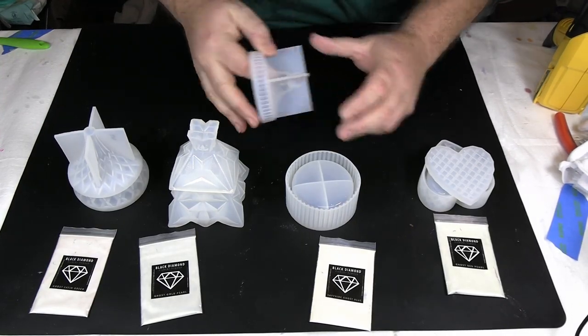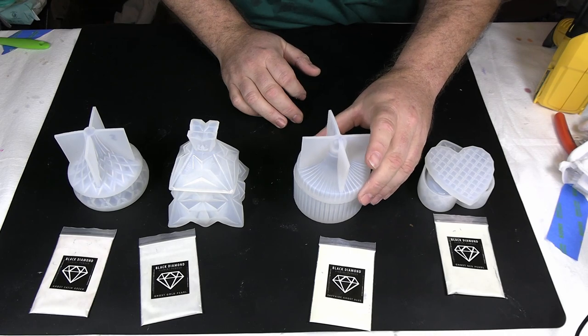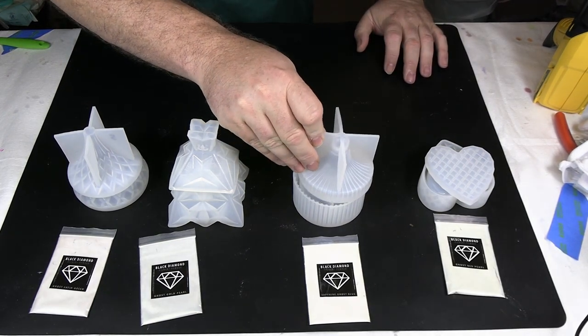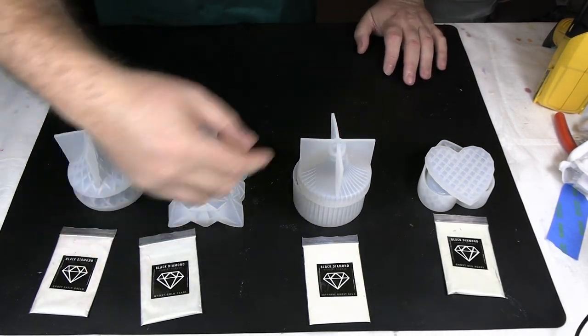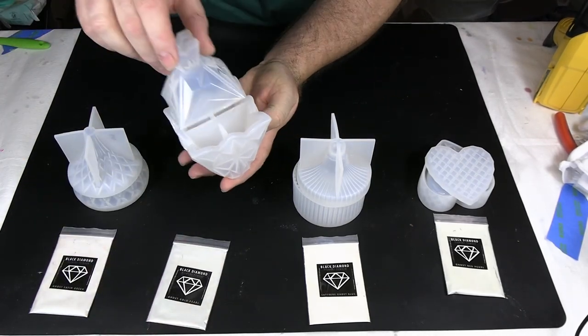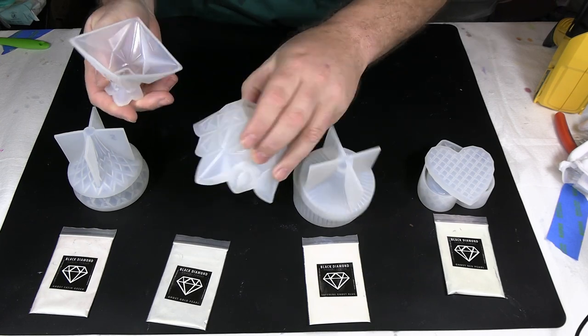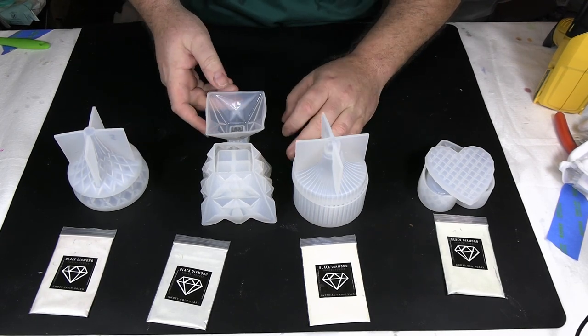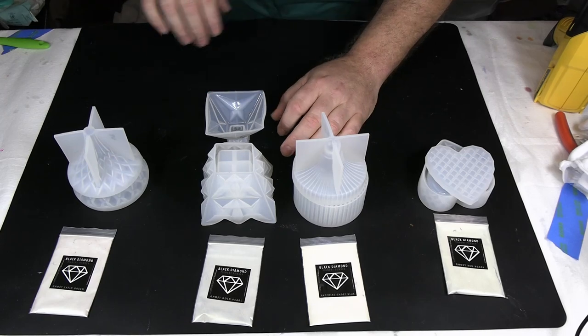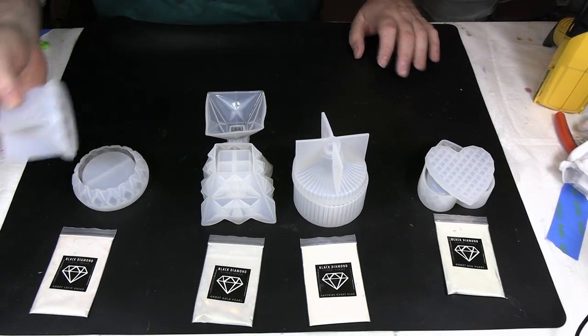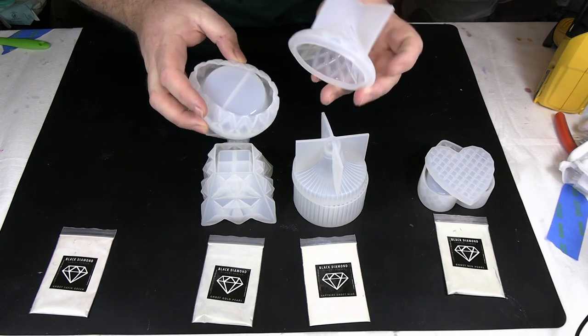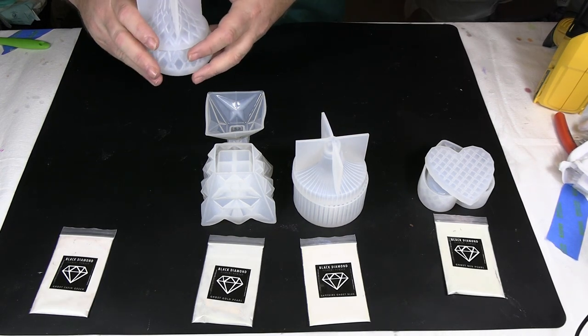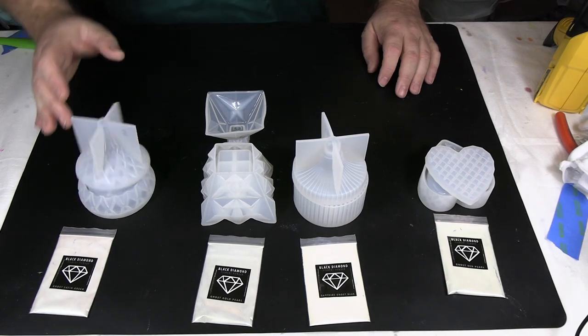This one makes kind of a teardrop lid and just a simple base. With that one we're going to do the sapphire ghost blue of the ghost pigments from black diamond. I think we're going to just use a clear resin on that one to see how it turns out, painted on the inside. This one is like a jewelry box. It goes like that when you put the lid on it but you pour it obviously this way. With this one I'm going to use the ghost gold pearl painted on the inside. And then finally this last one is just a small little box with a lid but again all of them have a pattern to make facets on the inside or ridges like that one. And that one we're going to paint in the ghost satin green as we do that one.